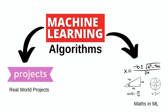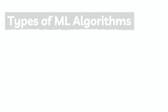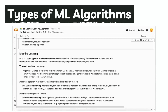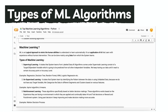Our next question in this video is: what are the types of machine learning? Machine learning is of three types. The first is supervised machine learning, the second is unsupervised machine learning, and the third is reinforcement machine learning.